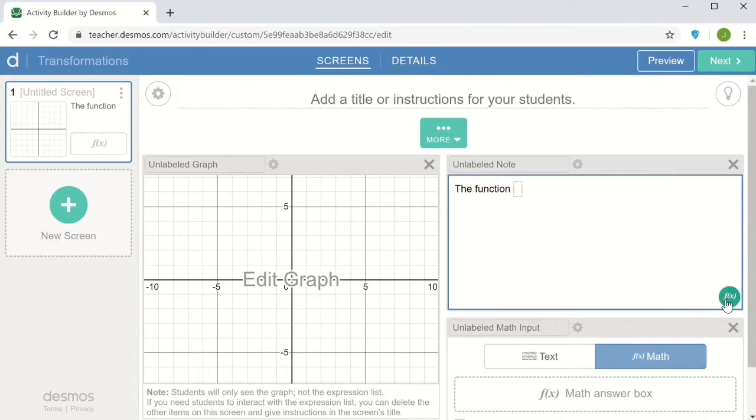I can create math formatting by clicking on the f of x button in the bottom. The function g of x is formed by translating the function, and now this time I'm going to call the function f of x, the absolute value of x. Write three units and up one unit.